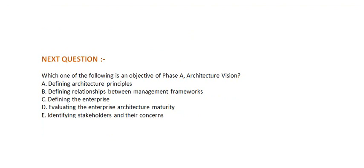Next question: which one of the following is an objective of Phase A, architecture vision? Option A, defining architecture principles. Option B, defining relationships between management frameworks. Option C, defining the enterprise. Option D, evaluating the enterprise architecture maturity. Option E, identifying stakeholders and their concerns.